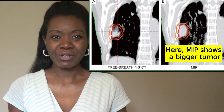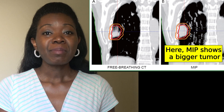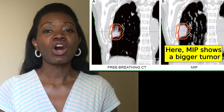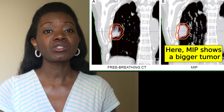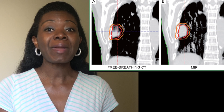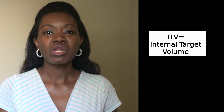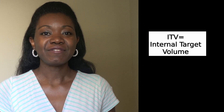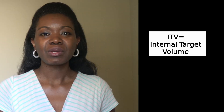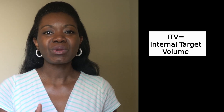MIP makes it possible for the radiation oncologist to contour a margin for the tumor. This is more patient-specific, as every tumor moves differently. This margin is known as the ITV, or the Internal Target Volume, which takes into account tumor motion.